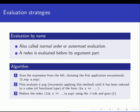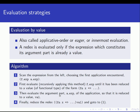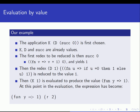Now if we look at the second strategy, evaluation by name - also called normal order, as discussed in lambda calculus, or outermost evaluation. We scan the expression from the left, choosing the first application encountered. We evaluate the f expression until it has been reduced to a functional value, and then we reduce the redex without reducing the argument first. We send the argument without evaluating it to the function. That's the only difference between the two algorithms.